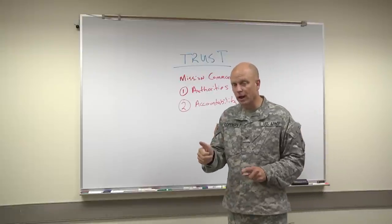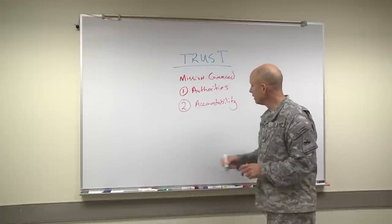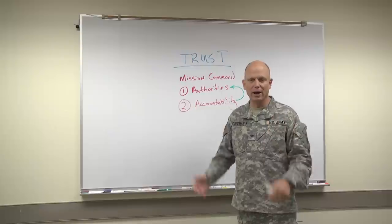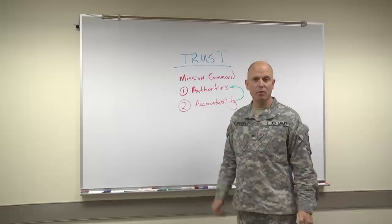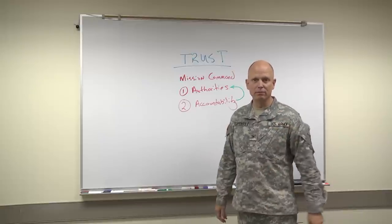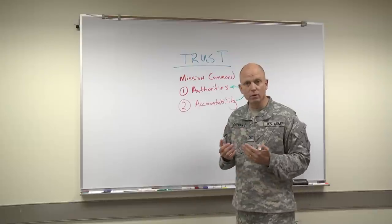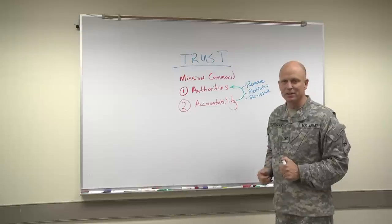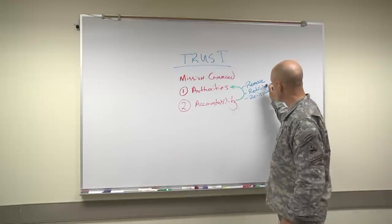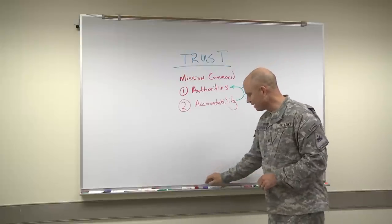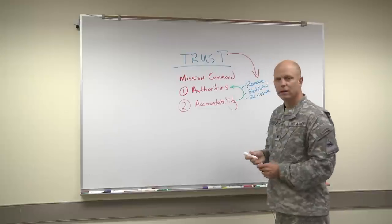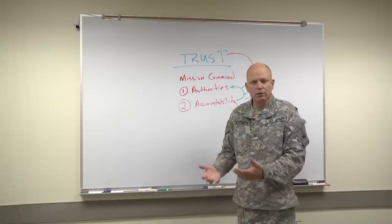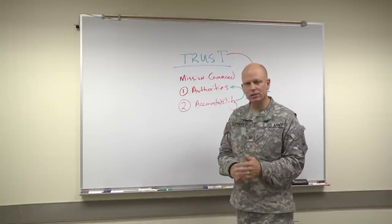When someone is not meeting the standard, you need to remove some authorities. We're really good at removing authorities and pushing them all the way up until the only person that can sign a DA Form 31 is well above your level. My position is: let's remove the authorities, then go into the three R's — remove the authority, retrain, and reissue that authority — because all of that gets back to trust. They broke trust a little bit; you remove the authority and then reissue it. If not, you'll retain all the authority at your level and lose your ability to mission command.